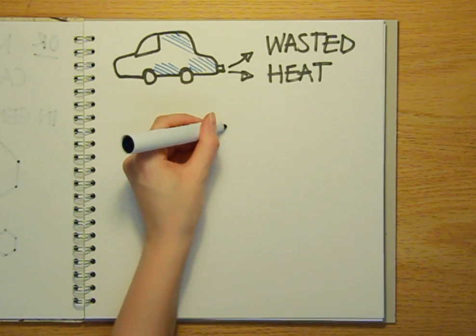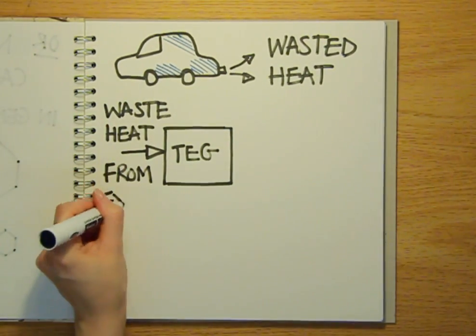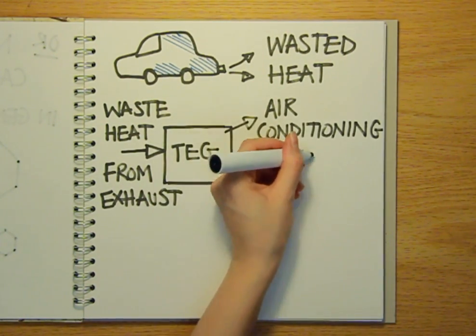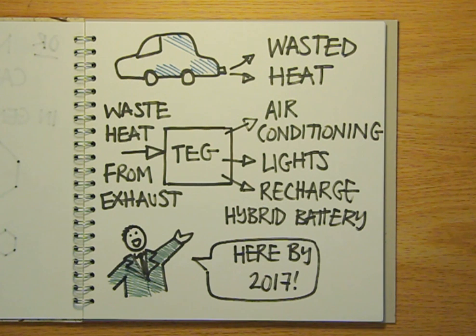As a result, a number of car manufacturers are now testing prototype TEGs that can scavenge back some of this wasted heat from the exhaust and use it to run things like the air conditioning unit and the lights and to charge the batteries in hybrid vehicles. Industry experts are predicting that we'll see the first mainstream TEG equipped cars as soon as 2017.